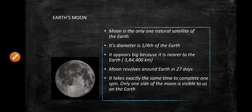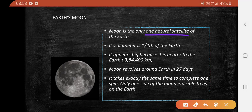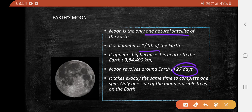The Moon is the only natural satellite of the Earth. Its diameter is about one-fourth of the Earth. It appears big because it is nearer to Earth. The Moon revolves around the Earth in 27 days and takes exactly the same time to complete one spin. Hence, only one side of the Moon is visible to us on Earth.